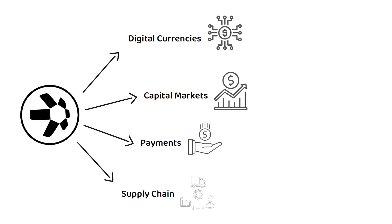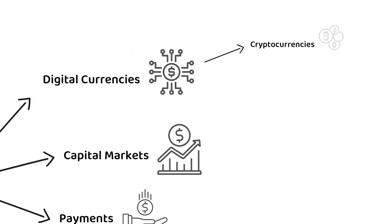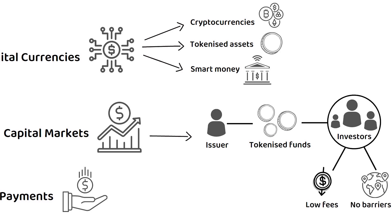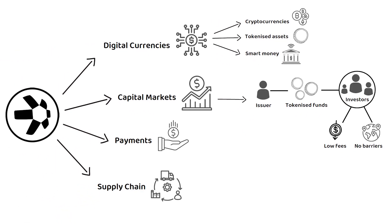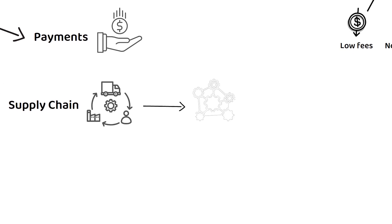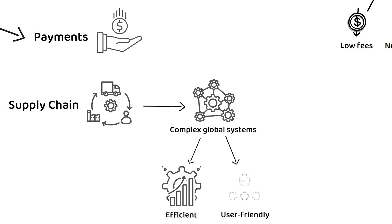To break that down, digital currencies are a combination of cryptocurrencies, tokenized assets, and smart money. Capital markets in this context are tokenized funds, offering the issuer more investors to source money from and offering the users lower fees and no geographical barriers to entry. Payments are exactly what you expect. And lastly, the supply chain element aims to make notoriously complex global systems more efficient and user-friendly, such as logistics and custom imports.